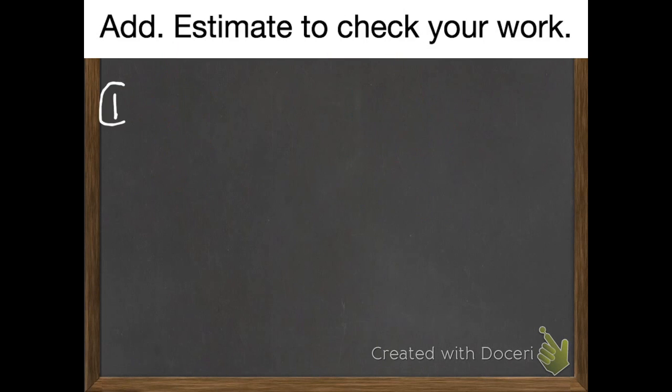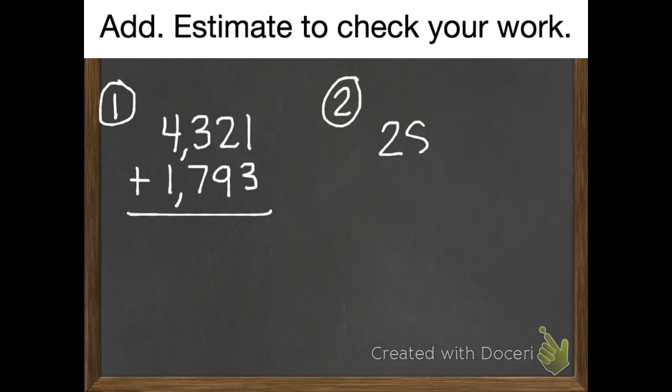Now, you're ready for just two problems that you're going to do for this lesson and bring them in and show me tomorrow. Your first problem is four thousand three hundred twenty-one plus one thousand seven hundred ninety-three. Your second problem is twenty-eight thousand one hundred fifty-eight plus thirty-one thousand nine hundred thirty-two. Add each of these, and estimate to check your work.